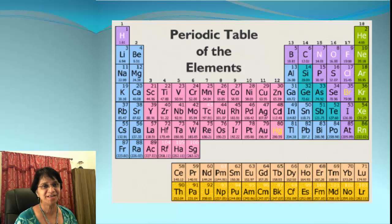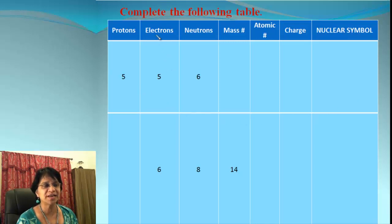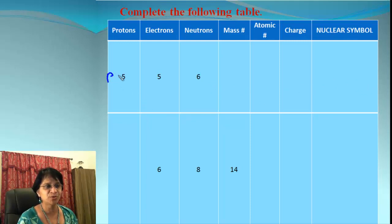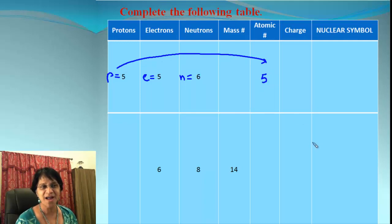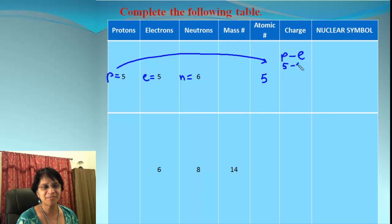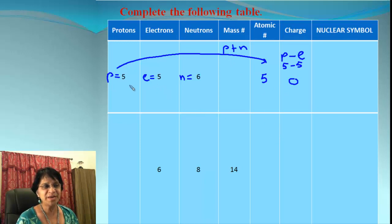In this problem, number of protons, electrons, and neutrons are given and we have to figure out the rest. Protons = 5, electrons = 5, neutrons = 6. The number of protons equals atomic number, so atomic number = 5. For charge: charge = protons minus electrons, so 5 minus 5 = 0. For mass number: mass number = protons plus neutrons = 5 + 6 = 11.